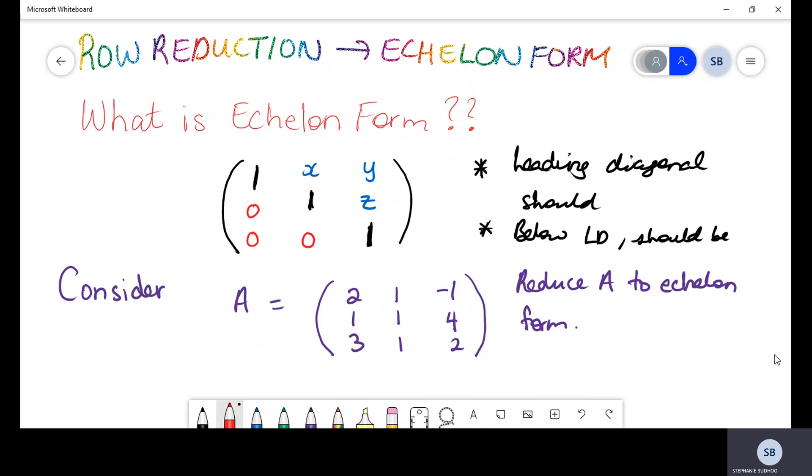So the first thing we want to begin with is exactly clarifying our minds as to what echelon form looks like. And on screen, you can see that when you're dealing with echelon form, it's obviously a matrix, but there are two key features to this echelon form type matrix. One of the first key features is that our leading diagonal must always have values of 1's or should be only 1's. And your second point is that all of your values below your leading diagonal should only be 0's. The values X, Y, and Z can be any number, it really doesn't matter.